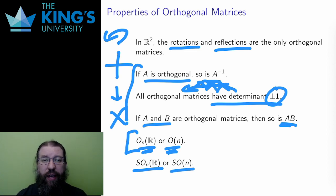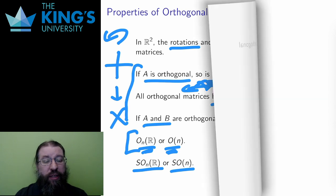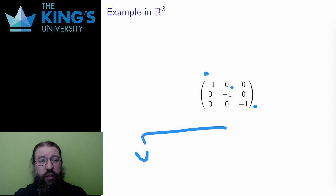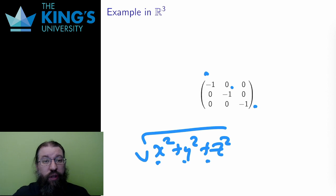All this has been pretty abstract, so let me end with some actual matrices. This is an orthogonal matrix in R³. It multiplies everything by -1. Since the length of a vector is the root of x² + y² + z², multiplying the coefficients by -1 has no effect on length, so this preserves length.